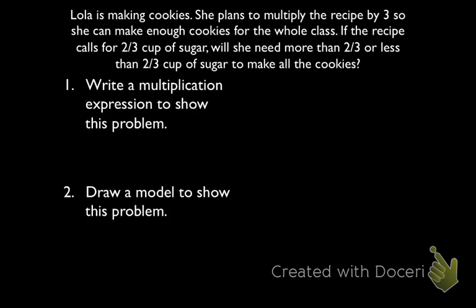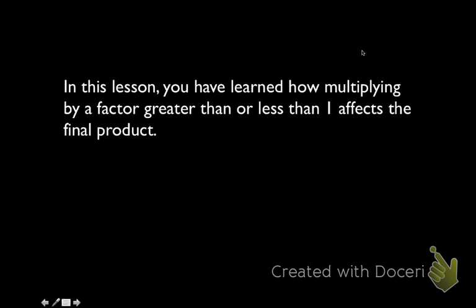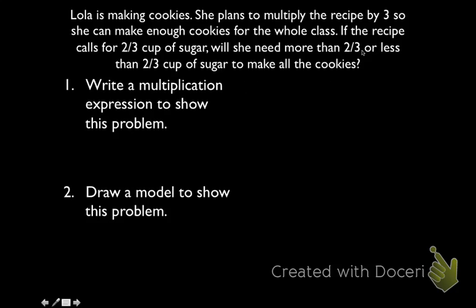Now it's your turn. Lola is making cookies. She plans to multiply the recipe by 3 so she can make enough cookies for the whole class. If the recipe calls for 2 thirds cup of sugar, will she need more than 2 thirds or less than 2 thirds of a cup of sugar to make all the cookies? First write the multiplication expression, then draw a model. These two steps will help you.